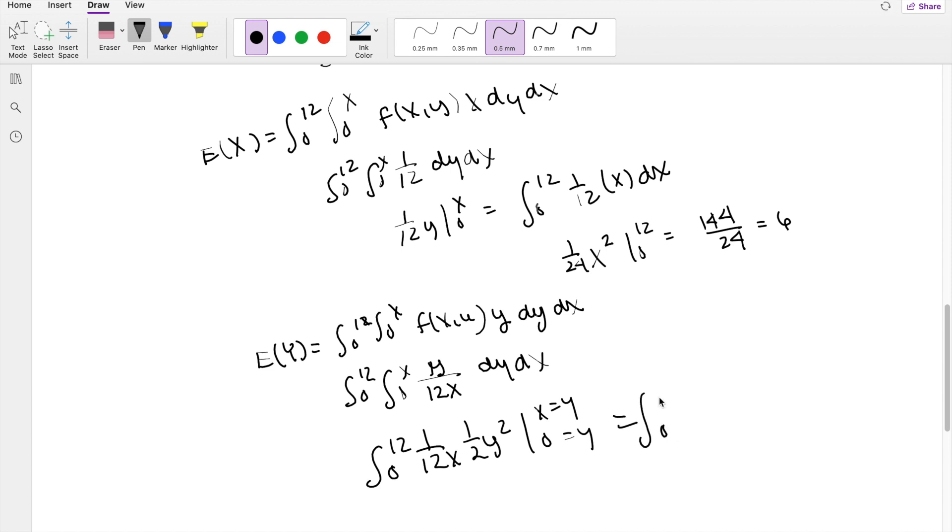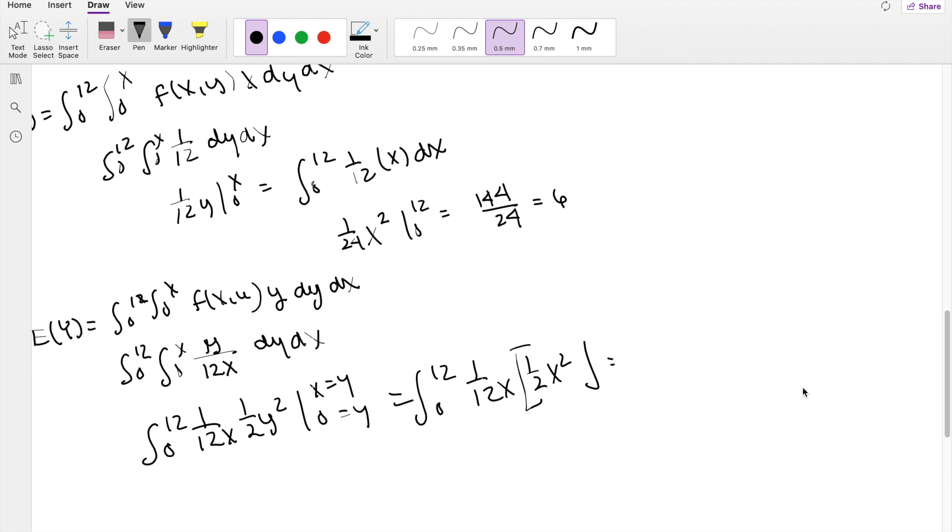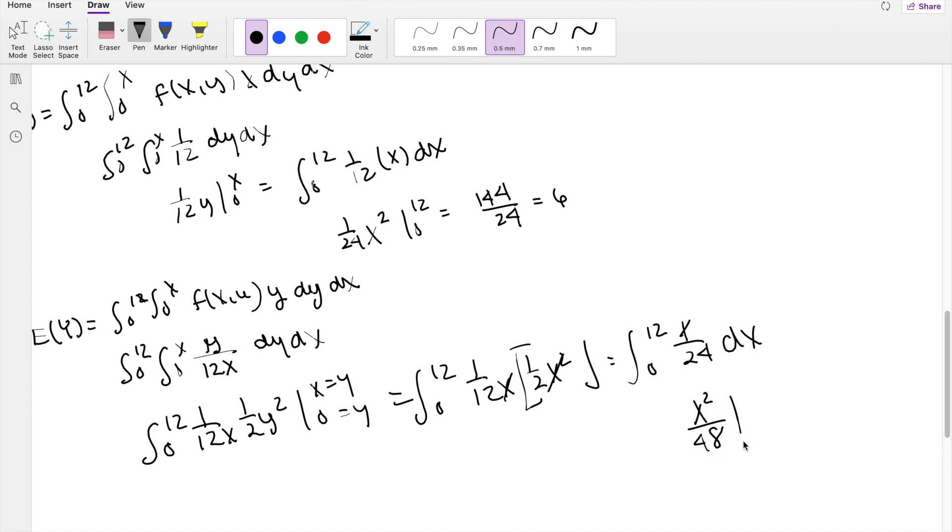Keeping the outer shell here, you get 1 over 12x times 1 half x squared. Lower limit just gives you 0. So then this is equal to, one of the x's cancel out, and then we can put the 2 and the 12 together, so you get 1 over 24. And then the numerator is just left with x dx. So then this becomes x squared over 48, integrating from 0 to 12, this is equal to 3.